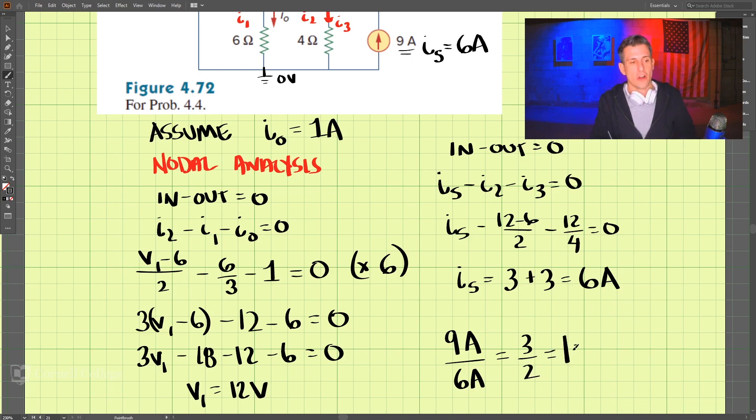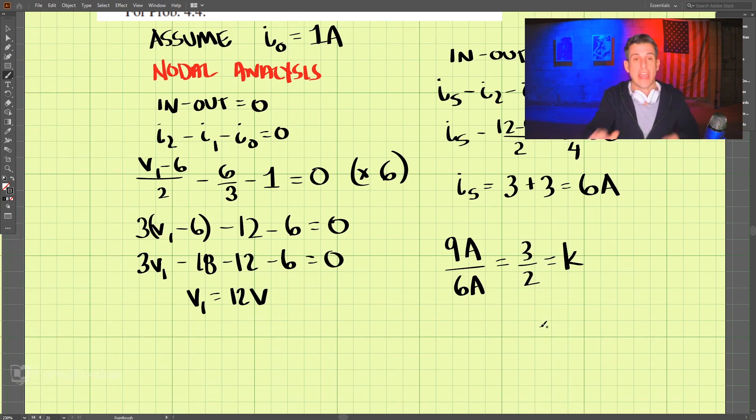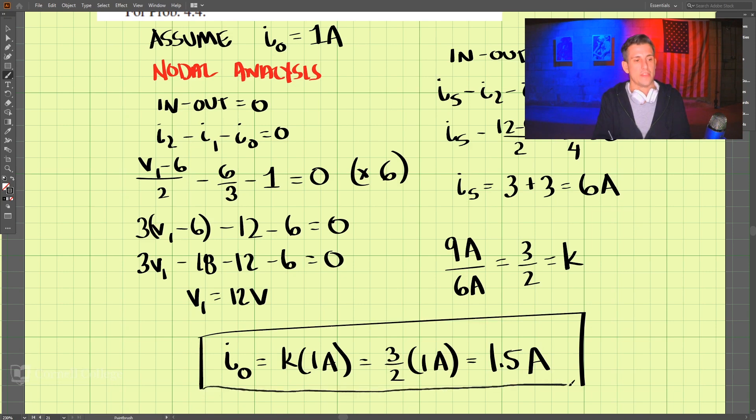So the real i0 is equal to k times 1 amp, which is 3 over 2 times 1 amp, and that is 1.5 amps. That is our answer for this problem using linearity.